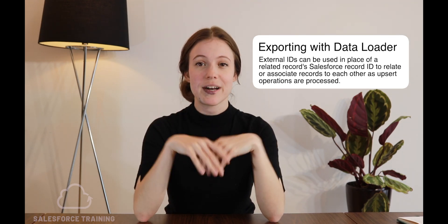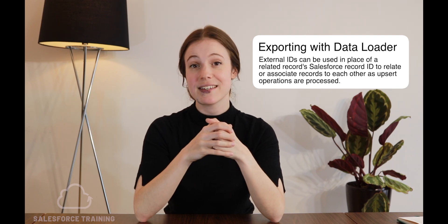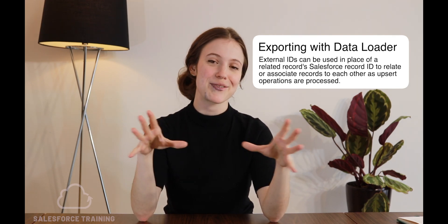For example, say you have Object B which has a lookup field to another object, Object A. You can then use the external ID field on Object A to relate those two records together. The external ID field is available for any object that has an external ID, and an external ID field can be selected in an import even if there are multiple IDs.